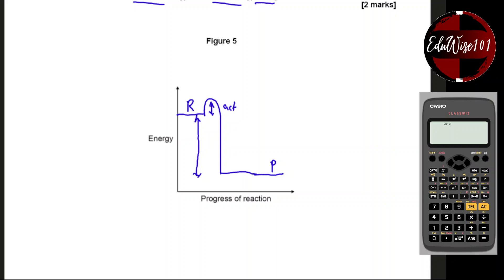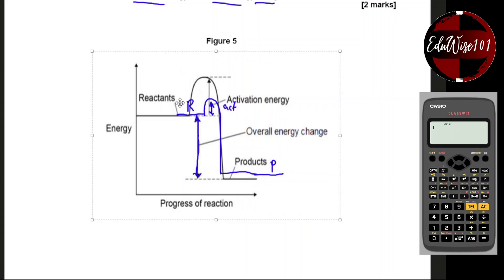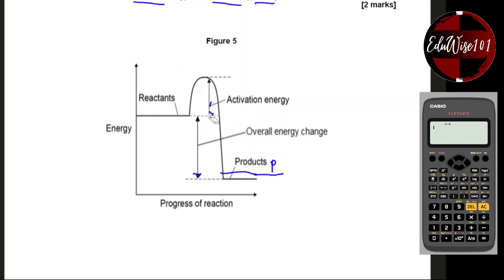Let me bring in a better diagram to describe this. As you can see from the diagram, the energy of the reactants starts high, the products are low. The activation energy is the energy needed to kickstart the reaction — the height of the hump — and the overall energy change is the drop from there to there.